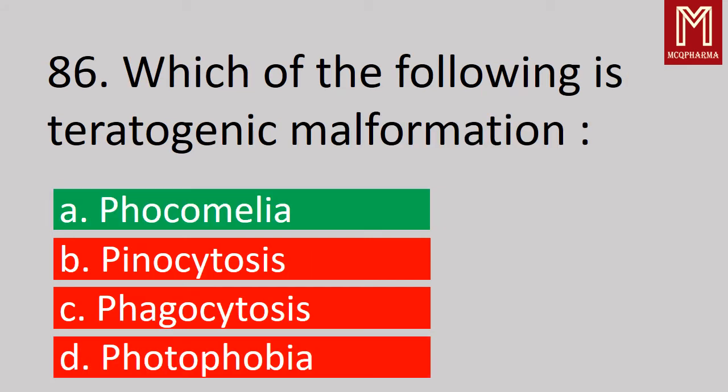Next question, which of the following is a teratogenic malformation? Correct answer, Option A: Phocomelia. Phocomelia is a rare birth defect that causes very short limbs. Phocomelia is a side effect of thalidomide.